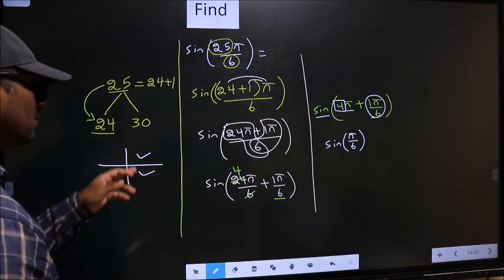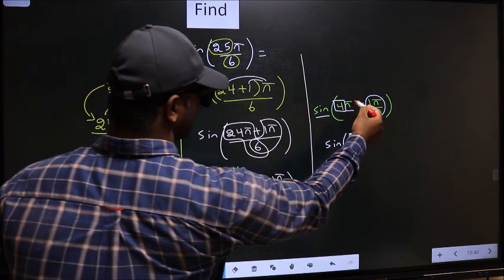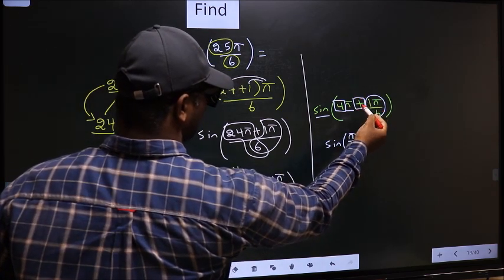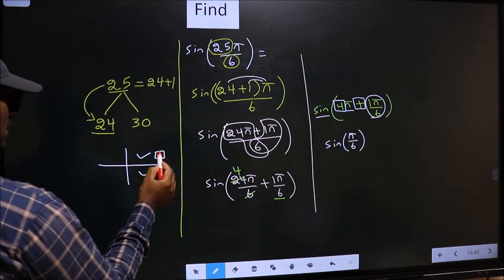So now to select which quadrant does the angle lie, we should look at this symbol. Here we have plus. So the angle lies in the first quadrant.